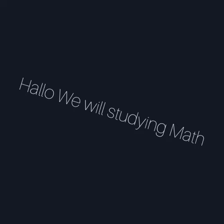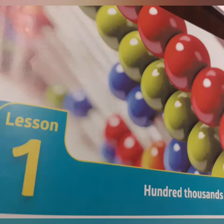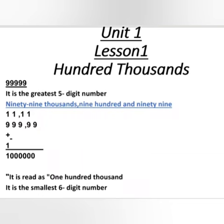Good morning everybody, I am Miss Marwa. I'm studying math in grade 4. Now, lesson: one hundred thousand. You know that nine hundred ninety-nine thousand nine hundred and ninety-nine is the greatest five-digit number. You have to add one to get the smallest six-digit number.